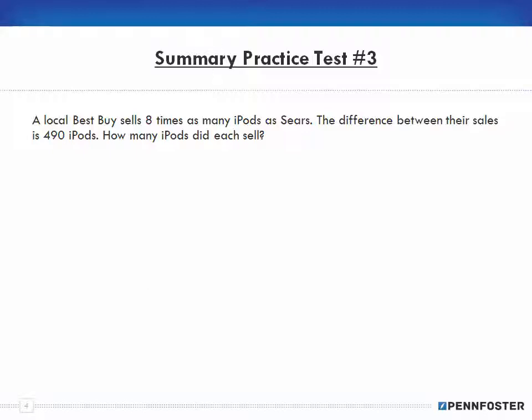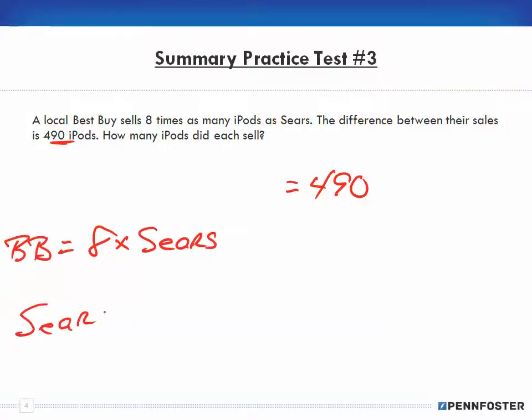Number three: A local Best Buy sells eight times as many iPods as Sears. The difference between their sales is 490 iPods. So if the difference is 490 and we know that Best Buy sells eight times Sears, well since the relationship here is we know that Best Buy is based upon how many they sell at Sears, so we set Sears to, let's call it P for iPods.